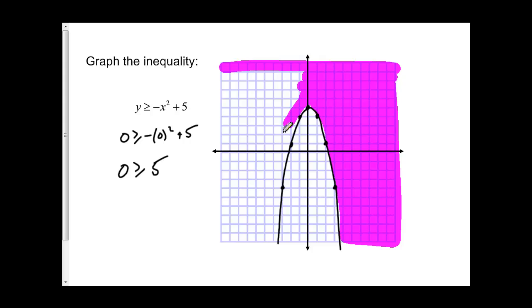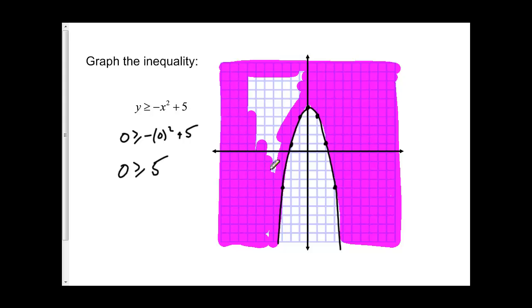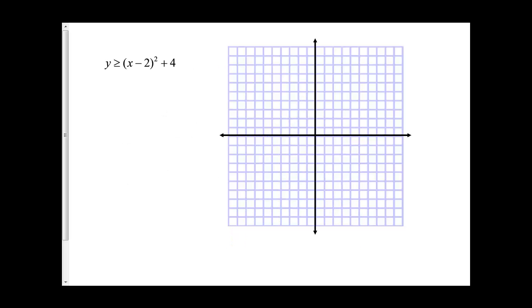The other way I could look at this, because it's a greater than equation, I've got y is greater than. It's in a y equals form. I could look at my parabola, and since it's greater than, I'm going to shade everything on top of the parabola. So if I start at the vertex and go above the parabola, everything should be shaded. If it was less than, I would go below the parabola. So that's another way to look at it.